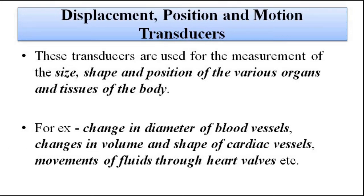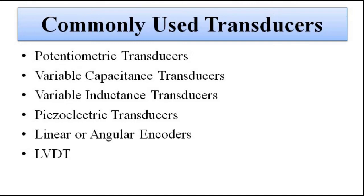For instrumentation engineers, we just need a basic understanding of the applications — we don't have to go into detail about biology. The commonly used transducers for movement, displacement, and position measurement are: potentiometric transducers based on change in resistance, variable capacitance transducers, variable inductance transducers, piezoelectric transducers, linear or angular encoders, and linear variable differential transformers (LVDT). In this video we will discuss potentiometric transducers, and upcoming videos will cover the others.